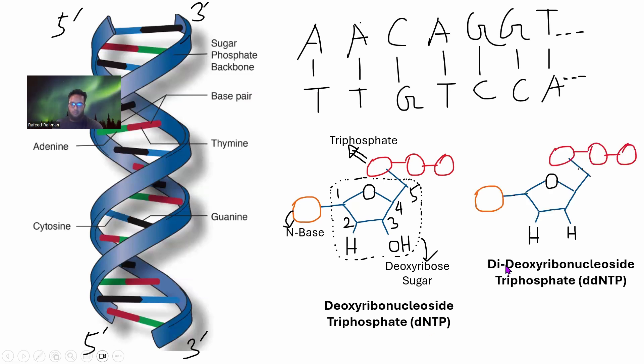There is another concept called dideoxyribonucleoside triphosphate, with this extra di. That means two oxygens are actually getting rid of. You can see there's no oxygen here - two oxygens are gone, which is why it's called dideoxy. This is called ddNTP. If this nitrogenous base is A, it's called ddATP. If it's for guanine, it's ddGTP and so on.